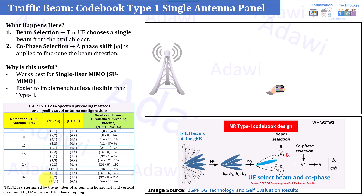Once you have selected your configuration, the next question is how this information is transferred from the gNB to the user and how the user selects the best beam from all these matrices. At the end, this is your code book — for example, 8 code blocks, 64 code blocks, or 256 code blocks, which corresponds to 32 beams in horizontal and 8 in vertical. The user needs to select the best beam and report to the gNB: 'This is the best beam and this is my angle of arrival — please transmit my traffic beam in this direction.'